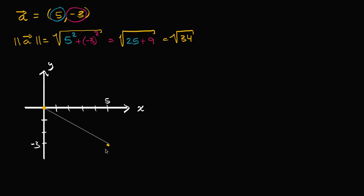And so the vector will look like this. If we want to figure out the magnitude, that's just the length of this line. What we can do is just set up a right triangle, where our change in y is negative three and our change in x is positive five. Five squared plus — you could just view the absolute value of this side as three — so five squared plus three squared is going to be the hypotenuse squared. It comes straight out of the Pythagorean theorem.